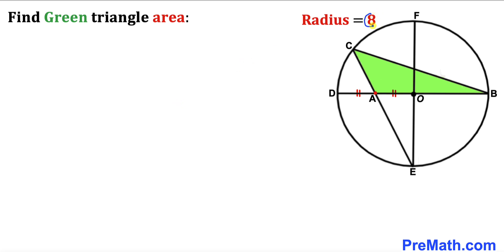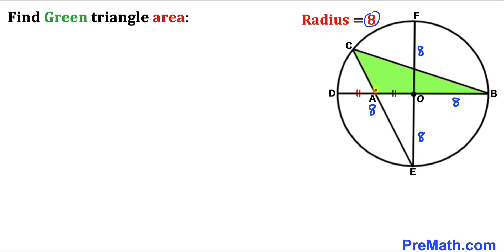We know the radius of the given circle is 8. That means OB is 8, OF is 8, OD is 8, and EO is 8 units as well. We also know that A is the midpoint, so AD is going to be 4 units and likewise AO is going to be 4 units as well.